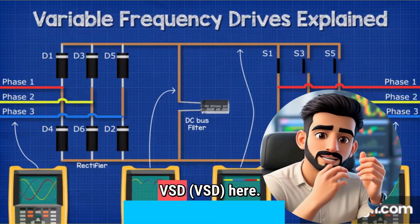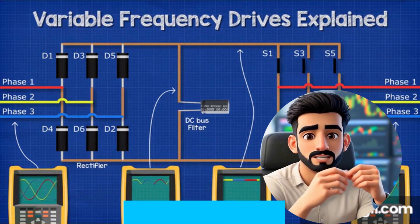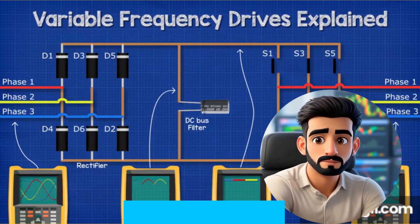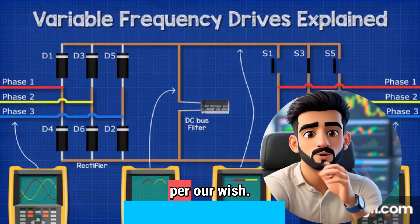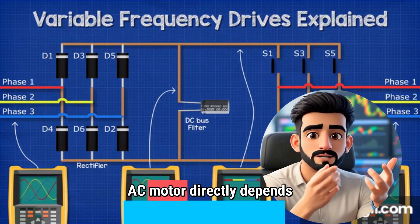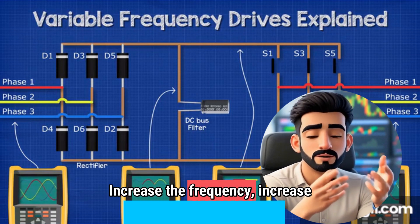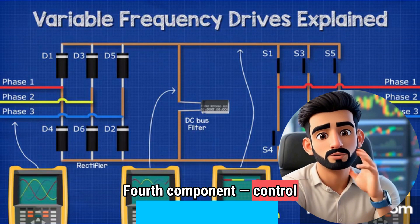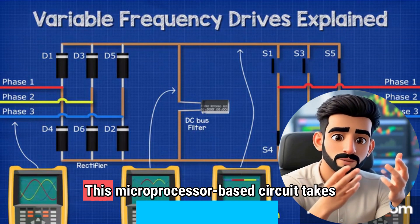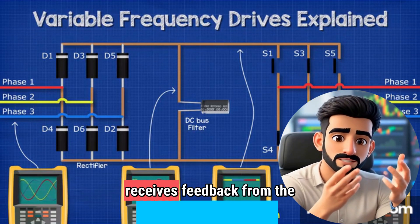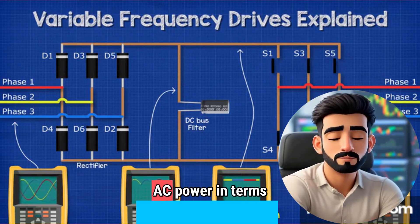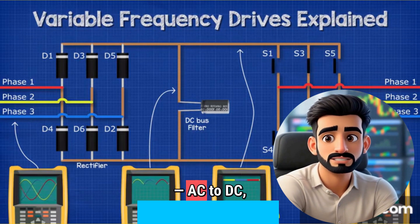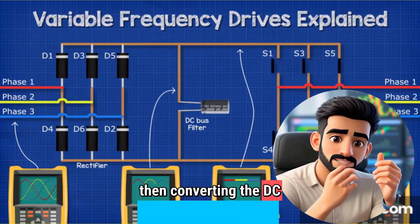You can call the inverter the heart or magician of the VSD. The inverter takes that smooth, stable DC power and converts it back into AC power — but here is a twist. The new AC power generated is not normal AC power; the frequency and voltage of this AC power can be controlled as per our wish. And as we know, the speed of an AC motor directly depends on the frequency it receives: increase the frequency, increase the speed; decrease the frequency, decrease the speed. The fourth component — the control circuit — is the brain of the VSD. This microprocessor-based circuit takes commands from the user, receives feedback from the motor, and guides the inverter on how much AC power, in terms of frequency and voltage, needs to be generated for the required speed of the motor. The overall process is: AC to DC, smoothing the DC, and then converting DC to controlled AC to power the motor.